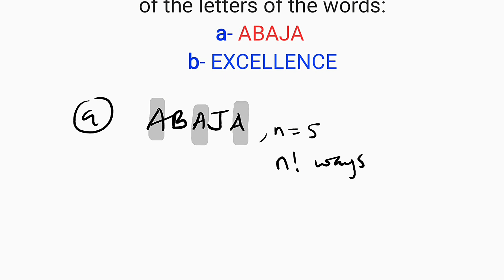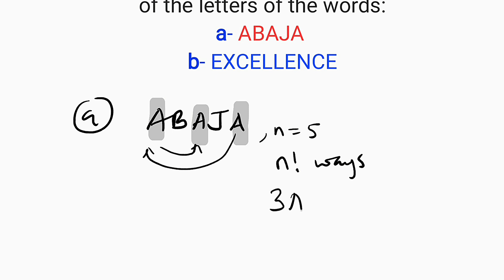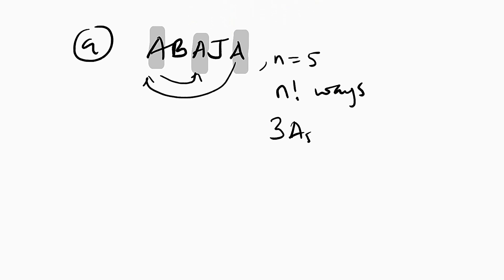We have one A here, another one here, and another one here. You cannot differentiate them by swapping the letters. Suppose I decide to take this one in one direction and bring the other one backward — A is A no matter where you take it. So you cannot differentiate it. Hence we are going to divide by the number of ways we can arrange the A's in this problem.